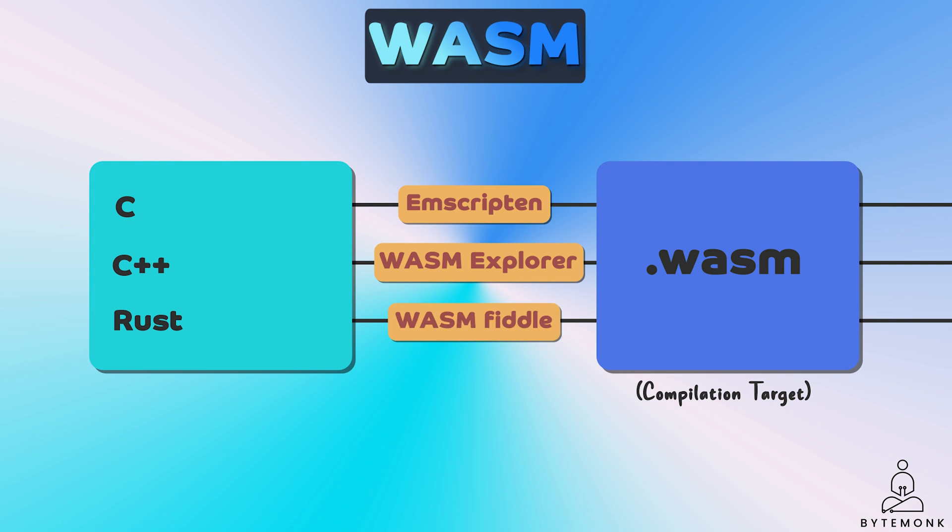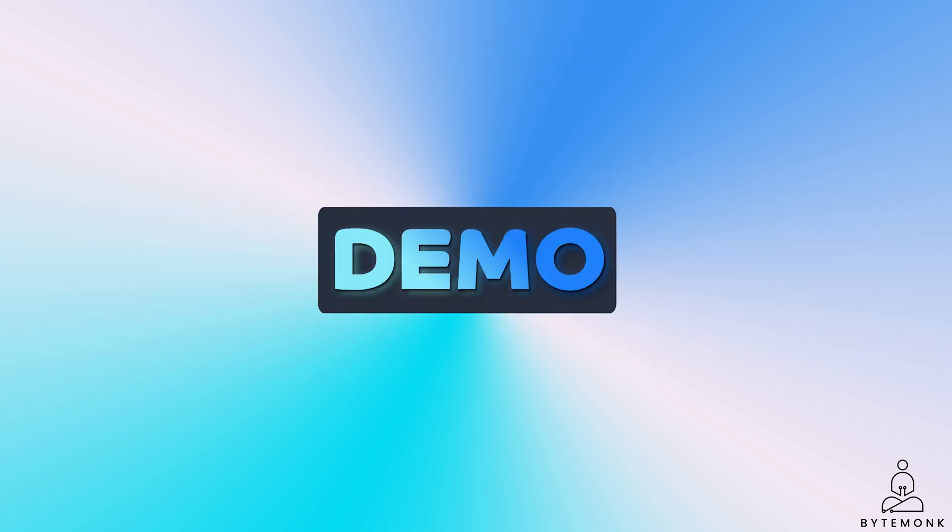This includes sophisticated tools like Figma for creating wireframes and even high-end video games, all without needing to install anything on your device. Developers typically use tools like Emscripten, Wasm Explorer, or Wasm Fiddle to compile their C, C++, or Rust code to Wasm binary format. Once this binary format is generated, it can be integrated into web applications using JavaScript, enabling seamless interaction between the Wasm code and the rest of the web application.